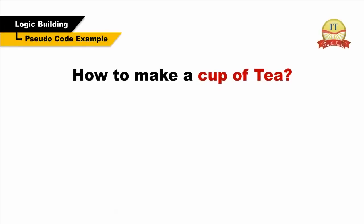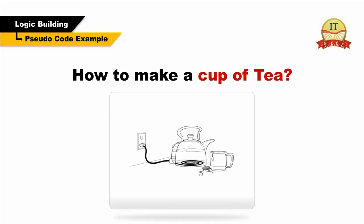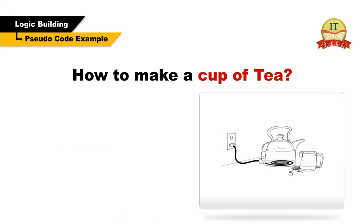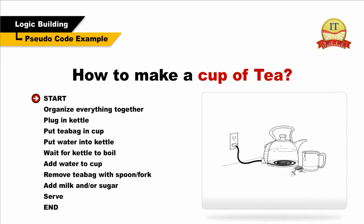We will now try writing pseudocode for making a cup of tea. The code will begin with a start tag. First of all, we will organize everything required to make a cup of tea. Then the next step, we will plug in the kettle. Then we will put the tea bag in the cup. Then put water into the kettle. Wait for the kettle to boil.